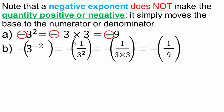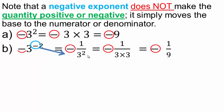That parenthesis is separating your negative out here. So it's negative of — that negative is just going to follow through. 3 to the negative second: we rewrite that as 1 over 3 to the second and then evaluate it. The negative second power moves the base to the denominator and you end up with 1 over 9. And that negative just follows through.